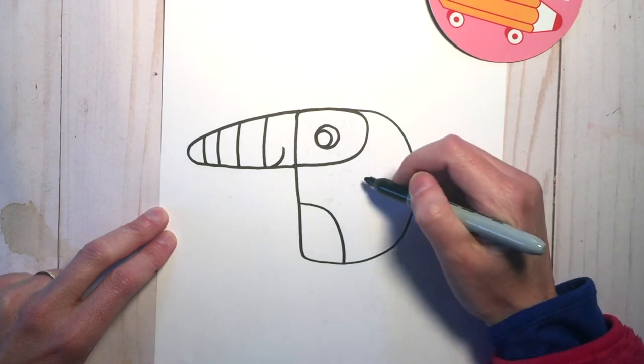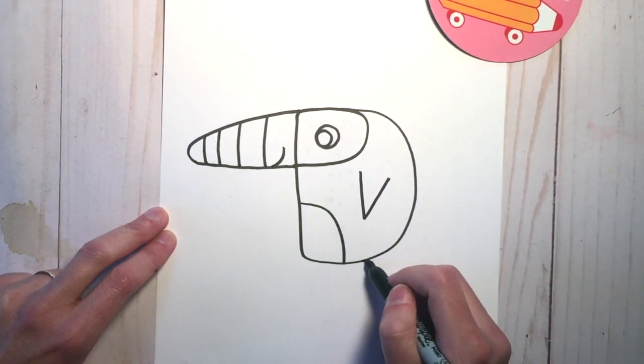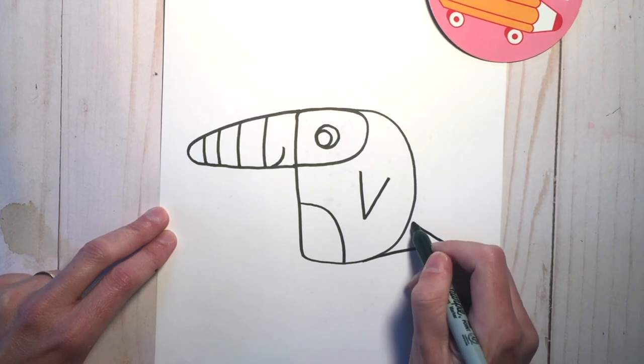Add a little curve there for the belly, a V for the wing, and another little V here for the tail.